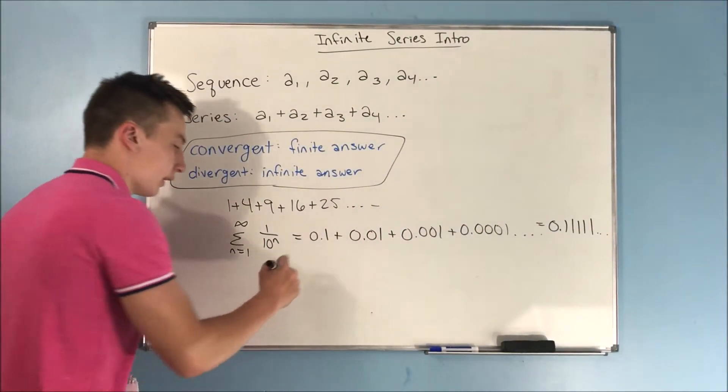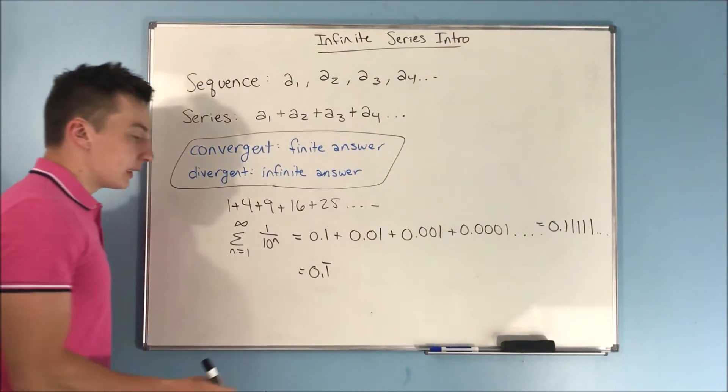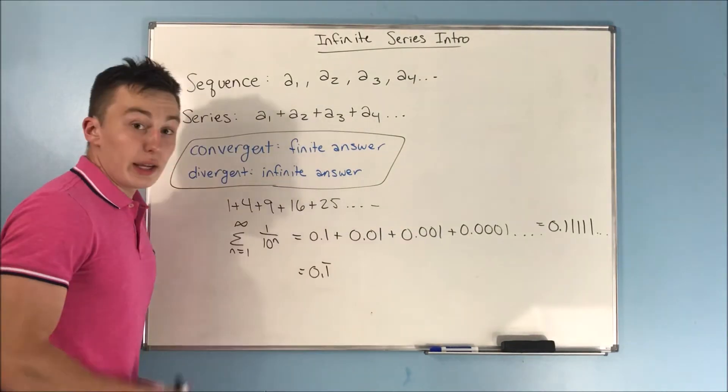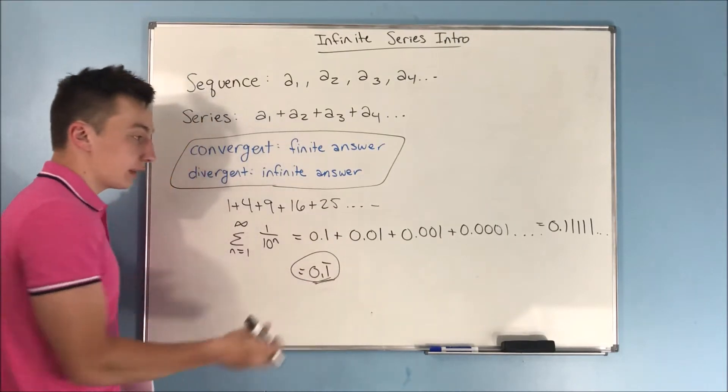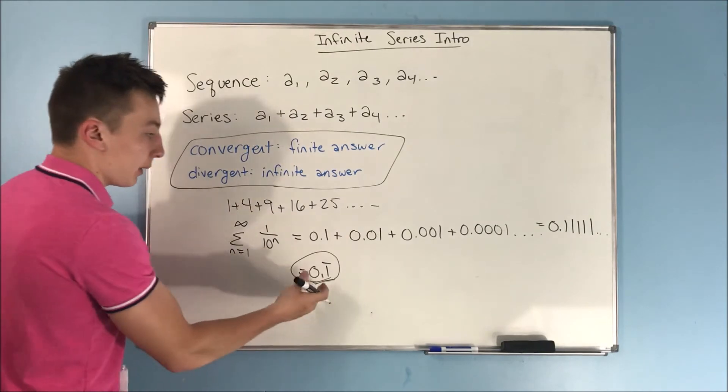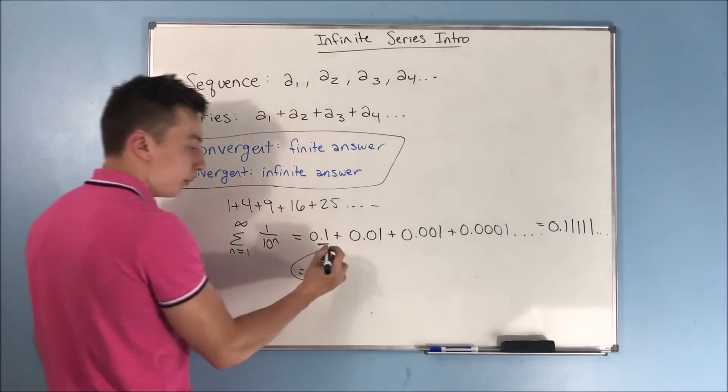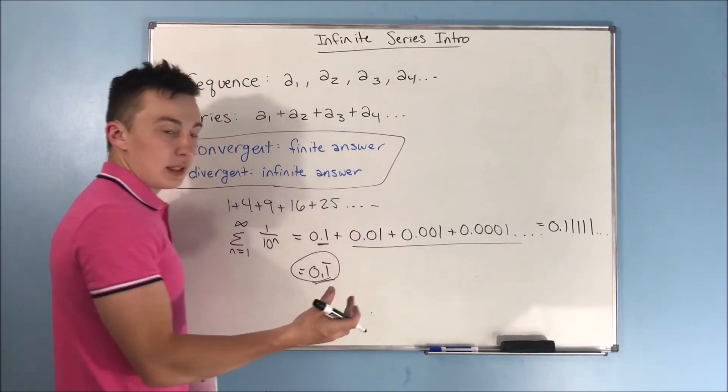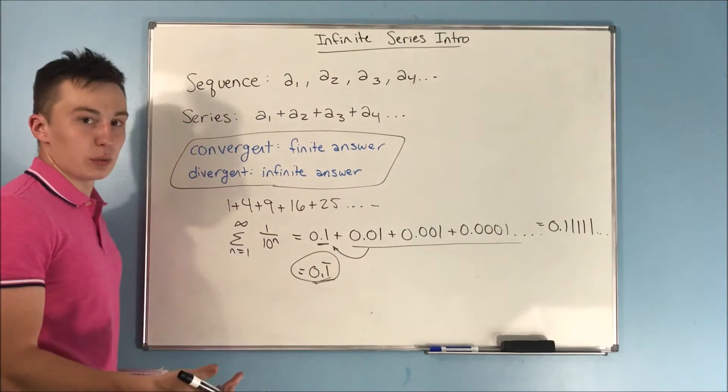This converges to 0.1 repeating. You can see that every term, you're just adding a 1 into the place over, and it's not going to get any bigger than this. This is as far as it can go, 0.1 repeating. It can't get any bigger, right? This can never be, this whole series can never add up to be 0.2 because all these numbers added up together are not going to be enough to change this 1 right here to 2.